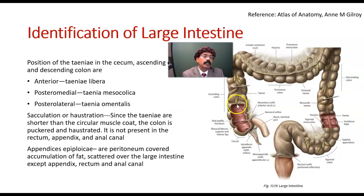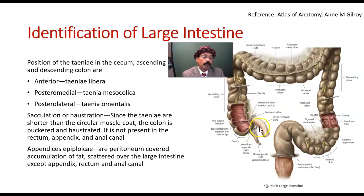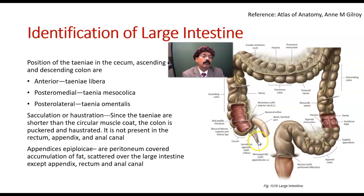The importance of the taenia coli is that in cases of appendicectomy surgery, it is sometimes difficult to find the appendix. The appendix may be in the posterior aspect and may be fixed to the colon on the posterior side. In that condition, the surgeon follows the taenia coli to the base of the appendix and can easily find and separate out the appendix.